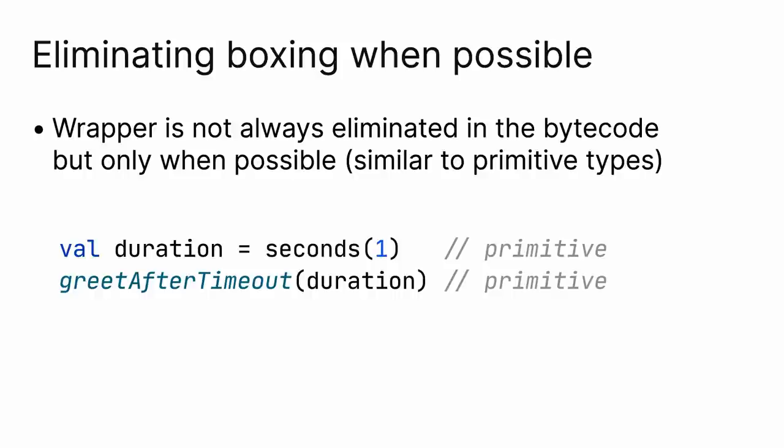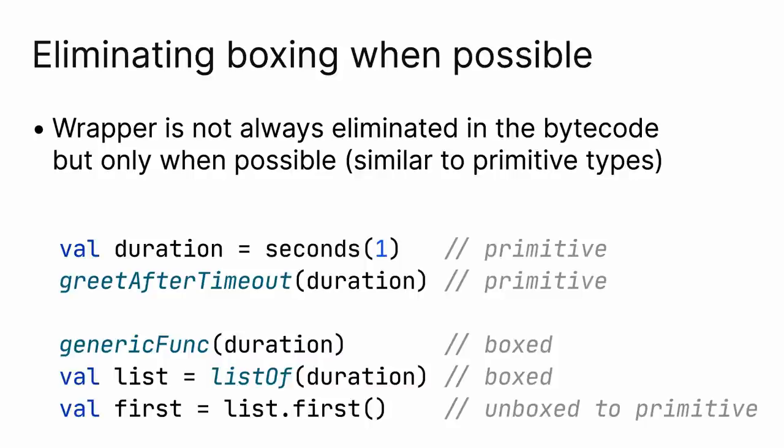Here, during the compilation time, it's duration, but it's replaced with a primitive type in the bytecode. If you store a duration value in a collection or pass it to a generic function, however, it gets boxed.